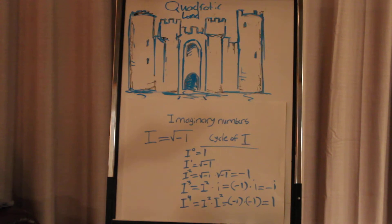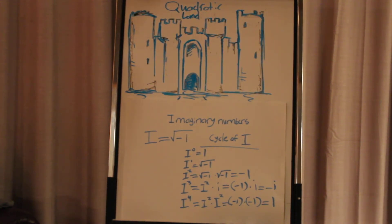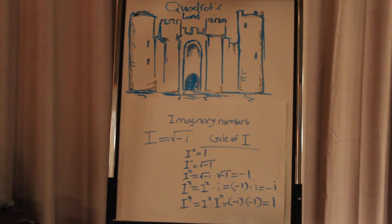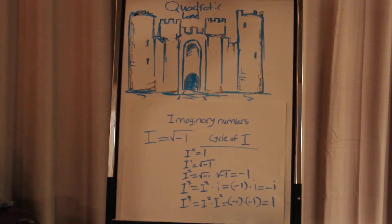But before we get into that, you must understand the traits of i. And so, we'll go on to talk about that right now. So, as you can see up on the little placard or the little sheet of paper, i equals the square root of negative 1, as I said. But as you can see, right next to that, we have the cycle of i, starting with i to the zero power, and anything to the zero power equals 1.